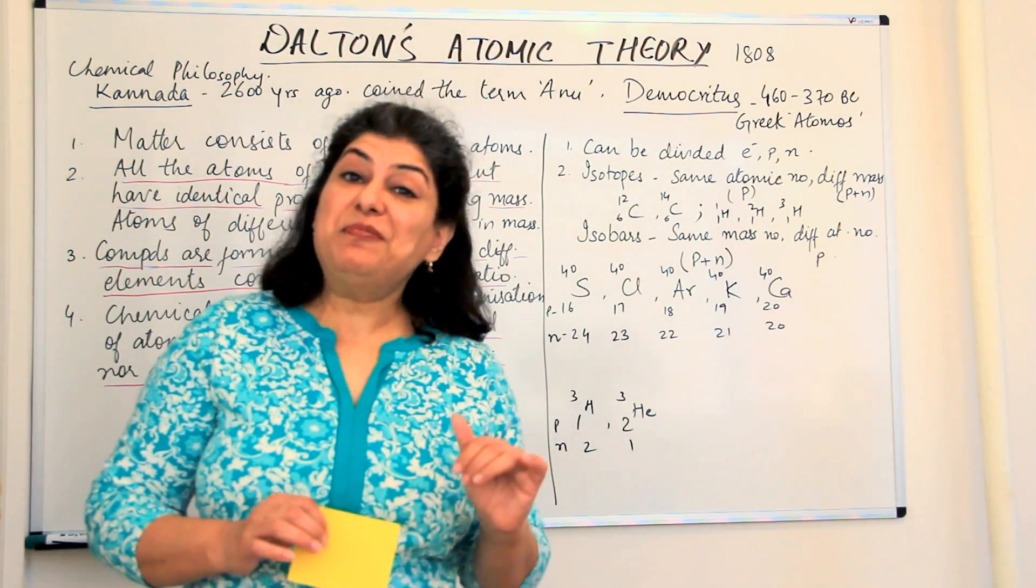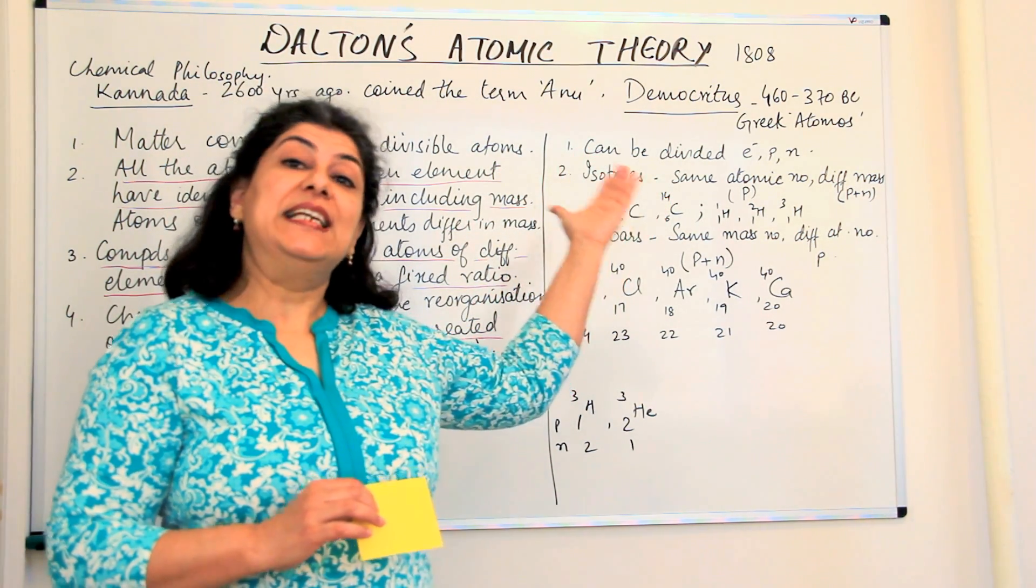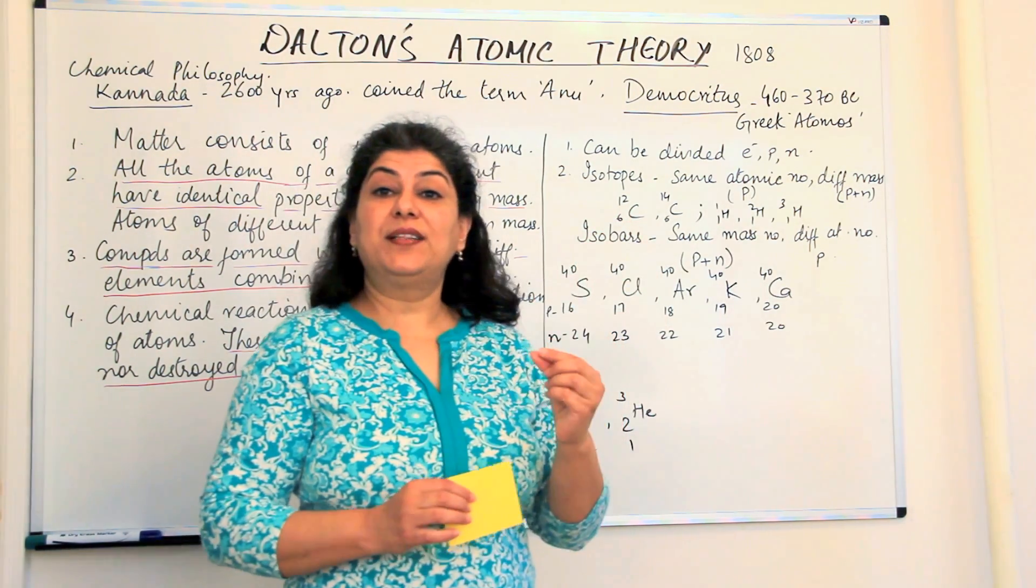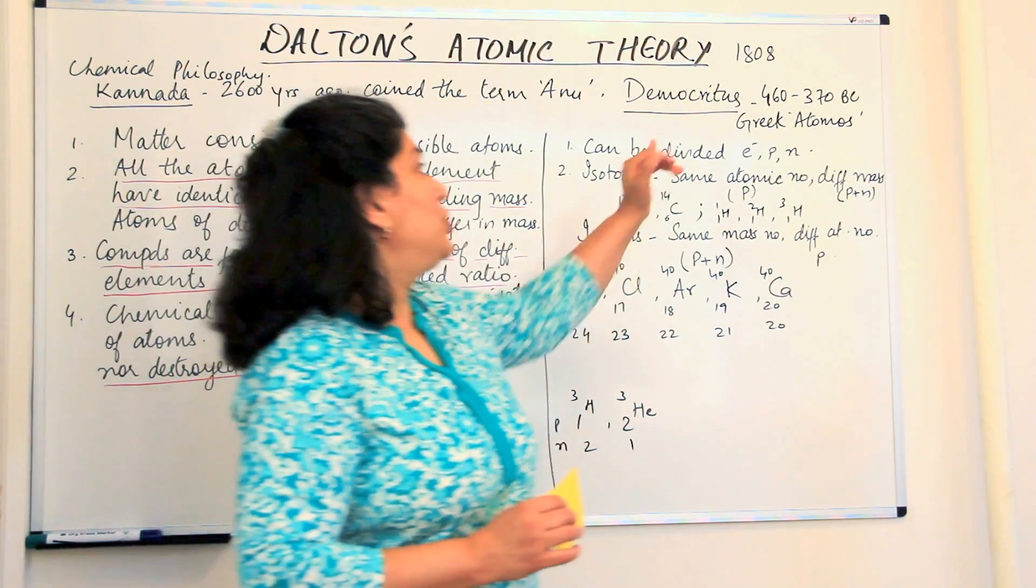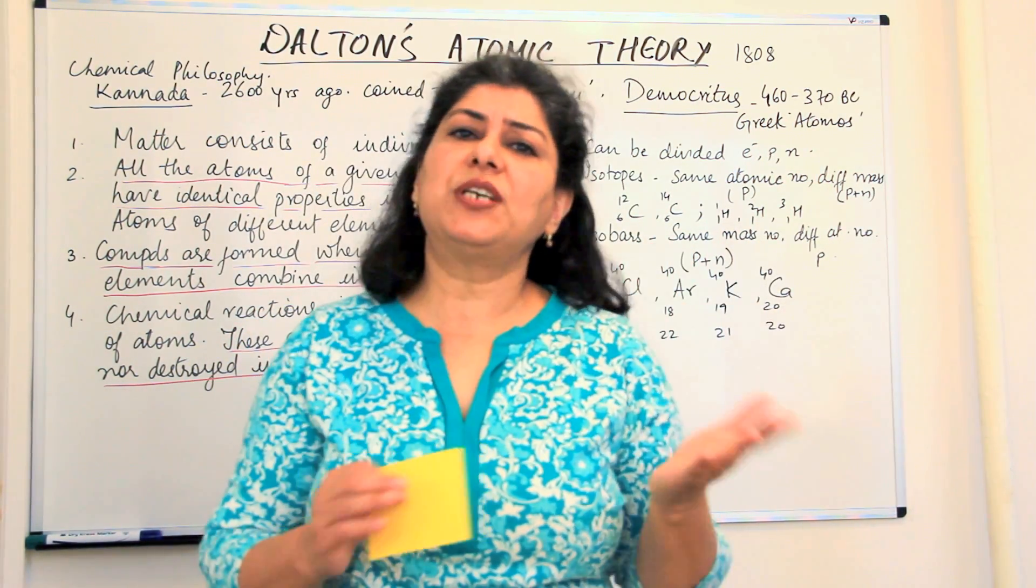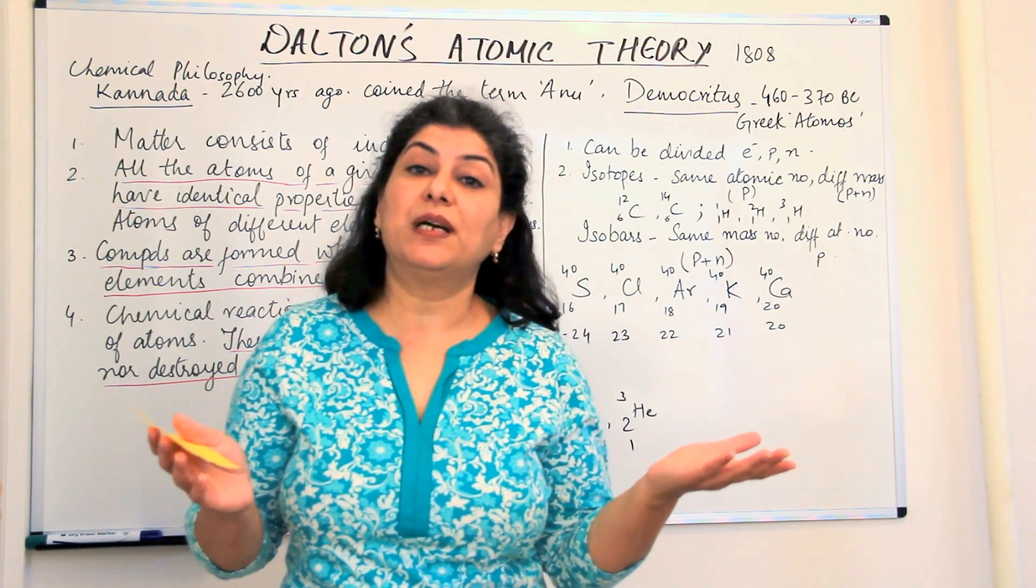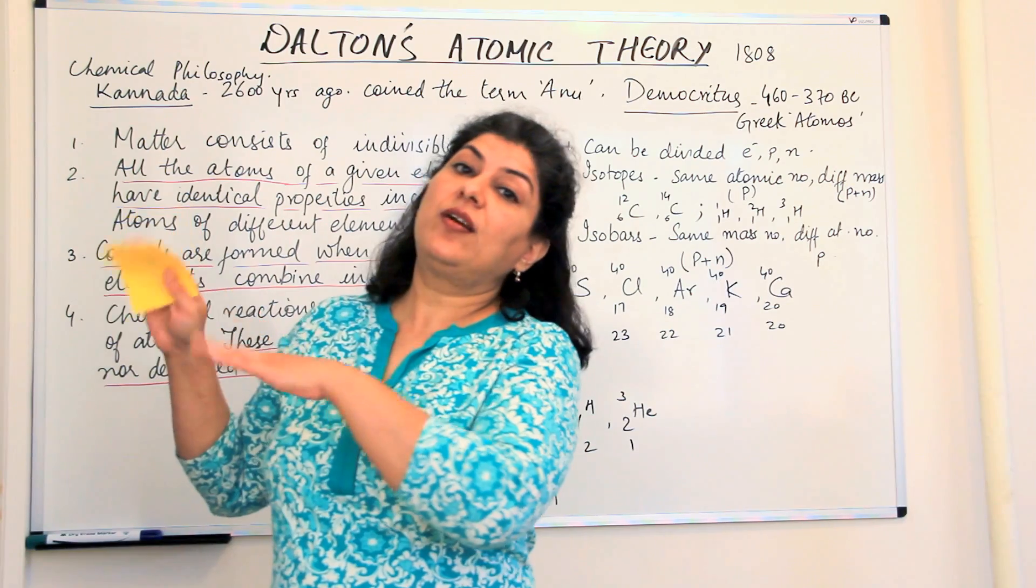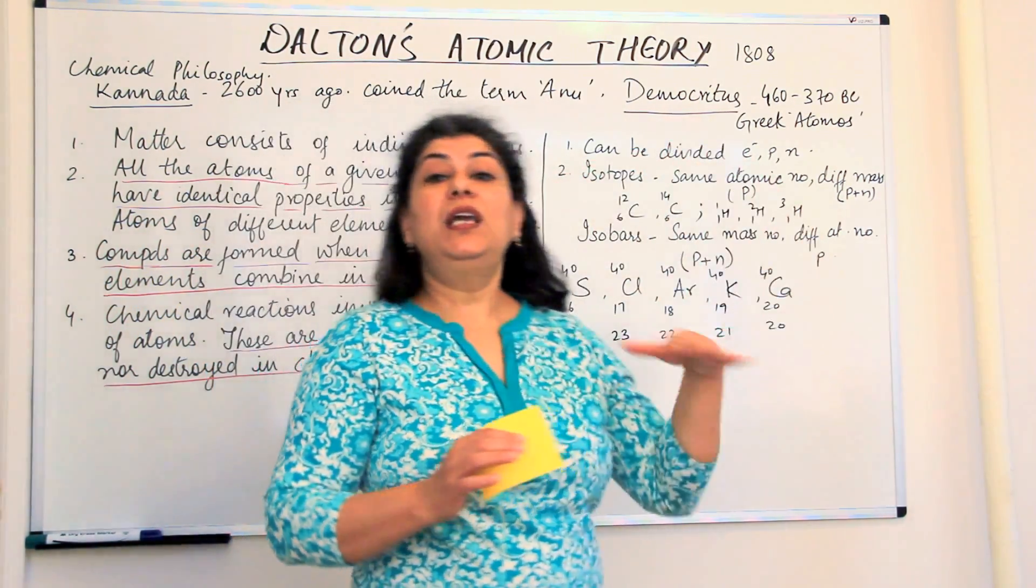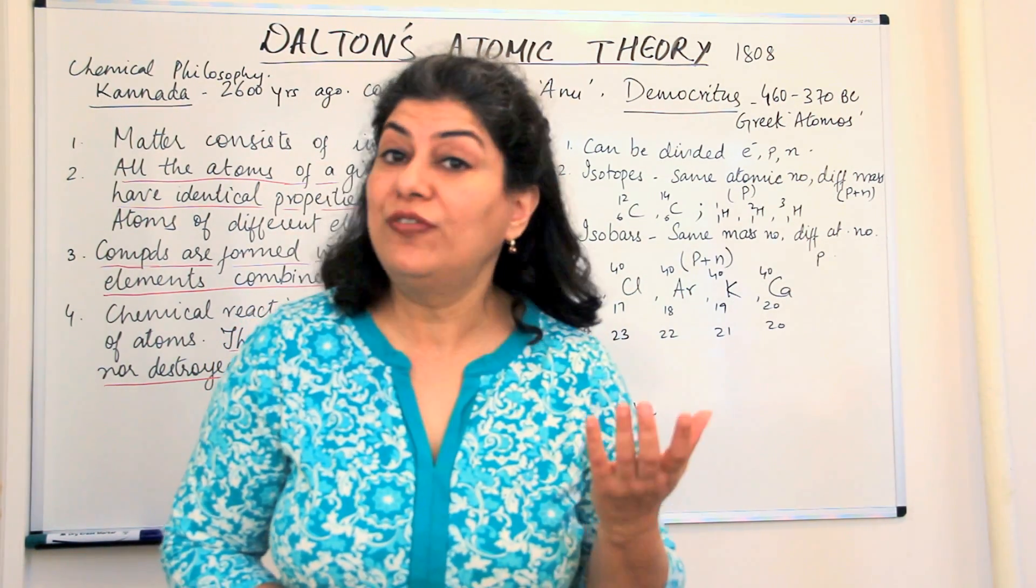Well, at the same time, correspondingly, there was a scientist called Democritus in Greece who also proposed a similar idea and he coined the term Atomos. This was in about 460 to 370 BC, which is approximately the same time as sage Kannada, but since the communication between the East and the West wasn't much at that time, sage Kannada always remained unknown while Democritus got the credit for coining the term or giving the idea or philosophy of an atom.